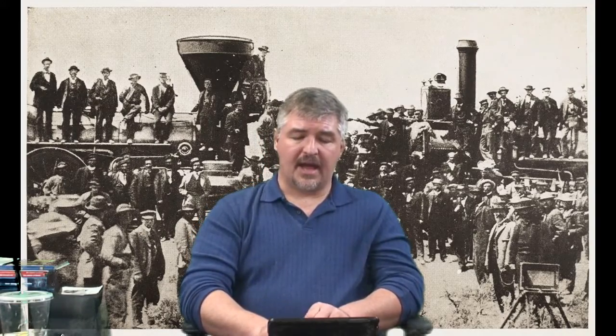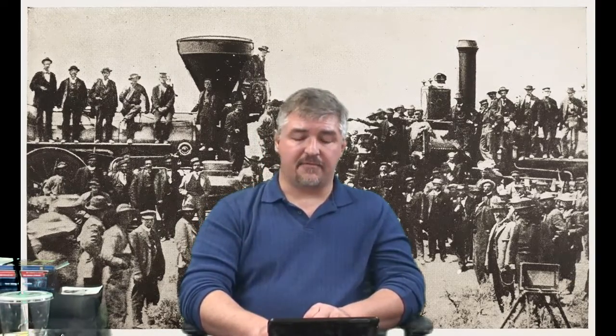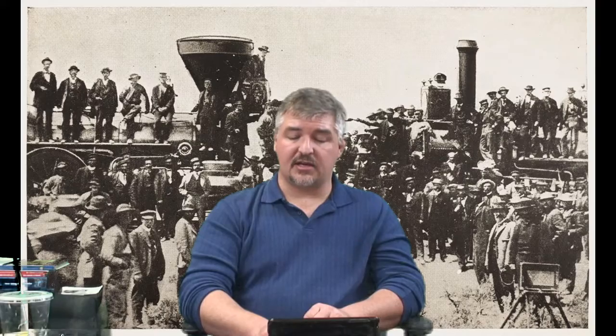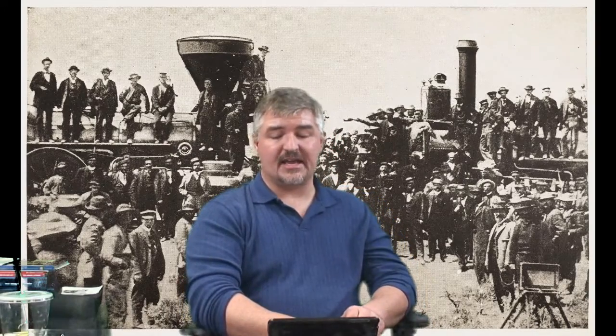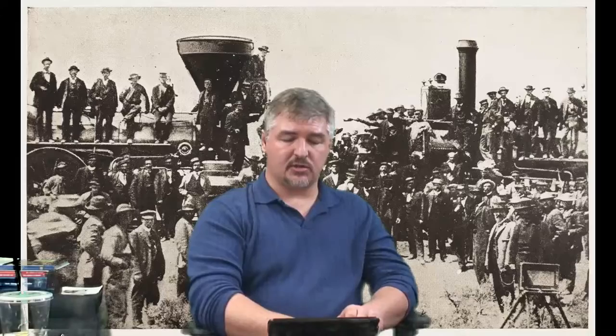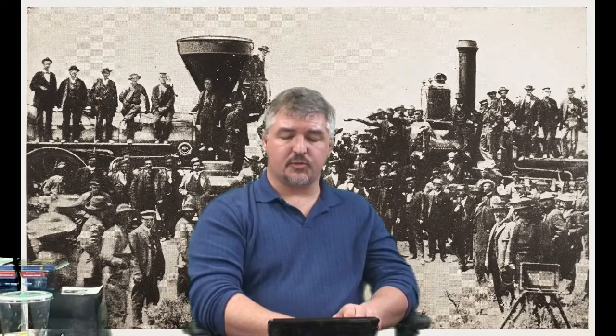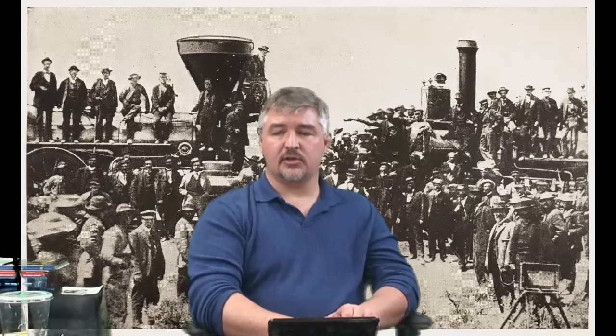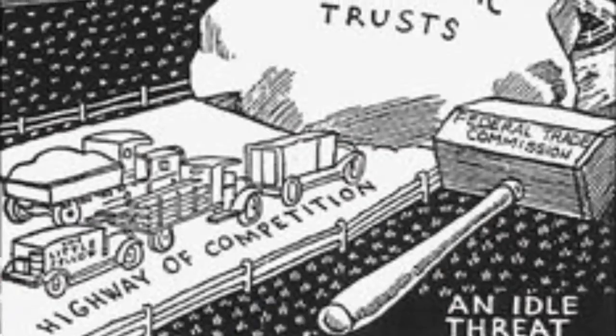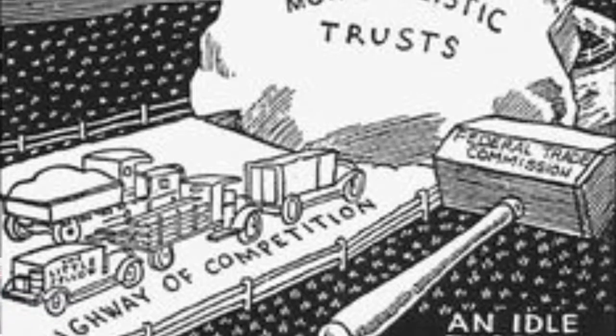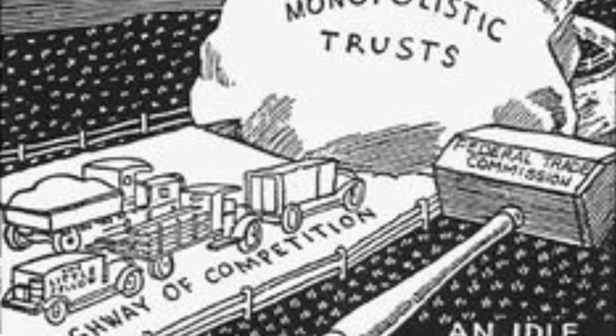By 1890, 75% of the nation's wealth belonged to only 10% of the population. Congress responded by passing the Sherman Antitrust Act, making many types of businesses designed to reduce competition illegal.